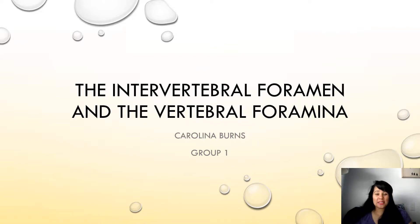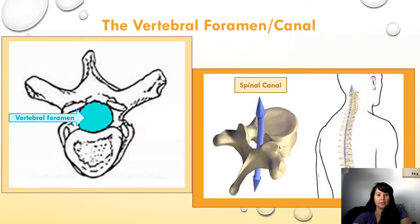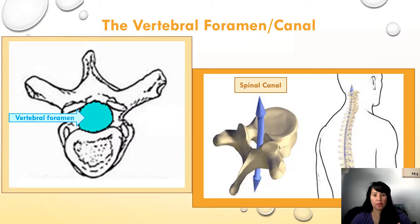Hi, this is Carolina Burns and this is my presentation on the intervertebral foramen and the vertebral foramina. The vertebral foramen is a single large hole that is encircled by the vertebrae. The vertebral foramina aligns with the adjacent vertebrae to form the vertebral canal, which allows the passage of the spinal nerve to go through it.